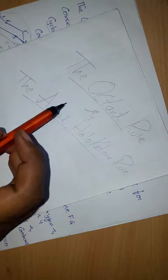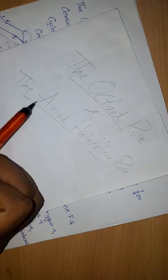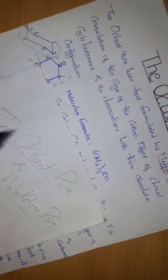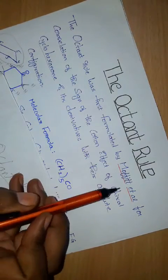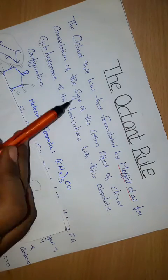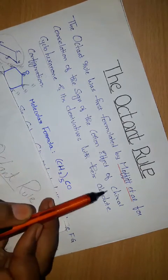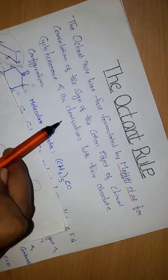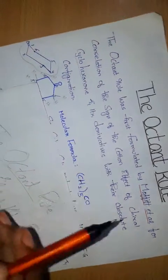In this video, I am discussing the Octant Rule and the Axial Halo-Keto Rule. The Octant Rule was first formulated by Moffitt et al. for the correlation of the sign of the Cotton effect of chiral cyclohexanone and its derivatives with their absolute configuration.